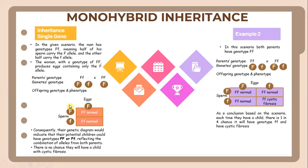Monohybrid inheritance. In the given scenario, the man has the genotype Ff, meaning half of his sperm carry the capital F allele and the other half carry the lowercase f allele. The woman with the genotype FF produces eggs containing only the capital F allele. So the father's genotype is Ff and the mother's genotype is FF. The gamete genotypes are F and f from the father, and F from the mother.